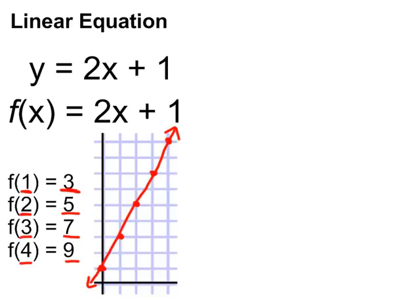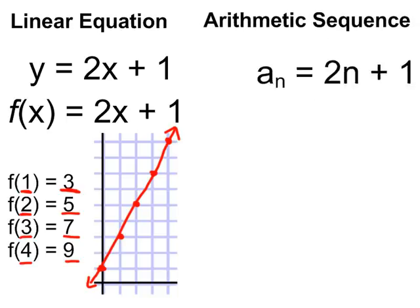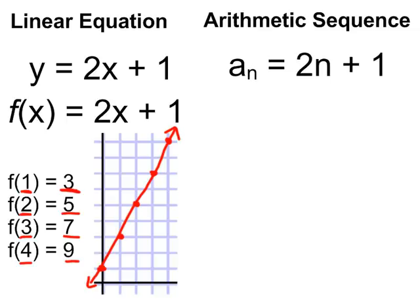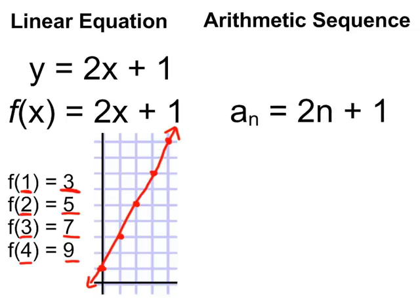So let's introduce arithmetic sequences this way. Very similar idea. The sequence notation is a little bit different. Instead of saying f of x equals 2x plus 1, I say a subscript n equals 2n plus 1. And just like with function notation, instead of f of x, we could say g of x. There's nothing special about the letter a. You could say b sub n, c sub n, and so on.